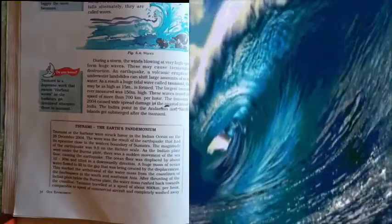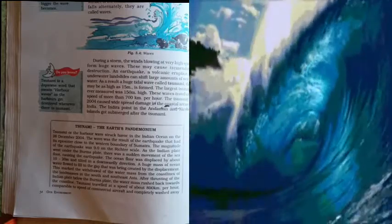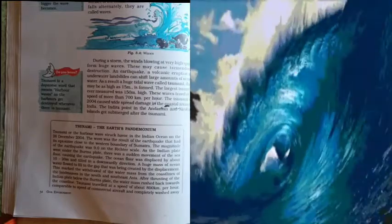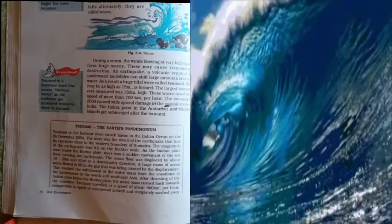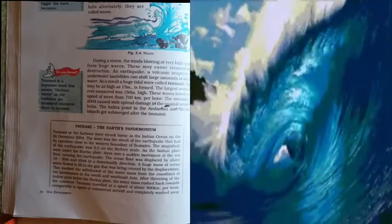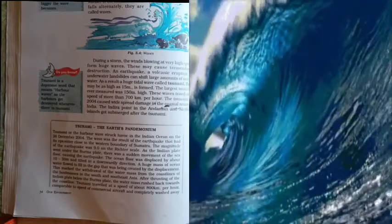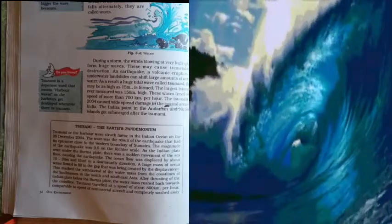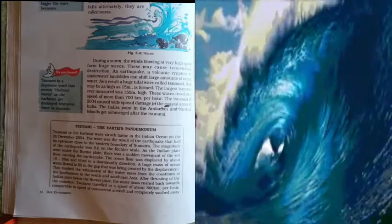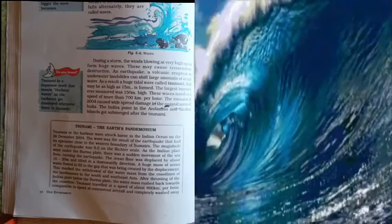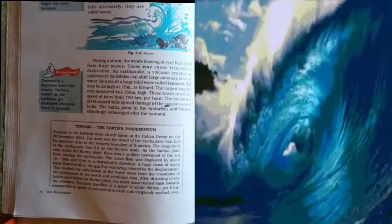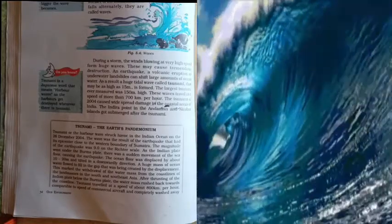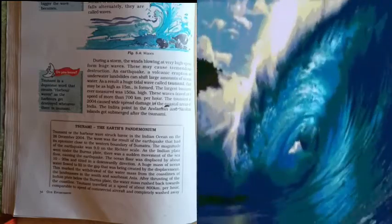If the velocity of the wind is low, they appear as ripples on the water surface. And when the wind speed is high, the waves also rise higher and crash against the coastline. During a storm, the winds blowing at a very high speed form huge waves. These may cause tremendous destruction.